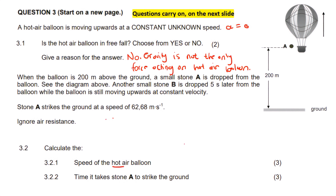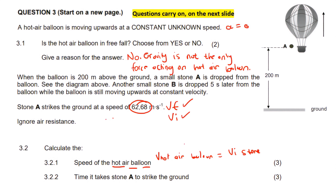When asked for the speed of the hot air balloon, we remember that the velocity of the hot air balloon is the same as the initial velocity of the stone. So we use the stone's data: we know the final velocity is 62.68 m/s, we're trying to find initial velocity, the acceleration is 9.8 m/s² (the stone is in free fall once dropped), and the displacement is 200 meters.